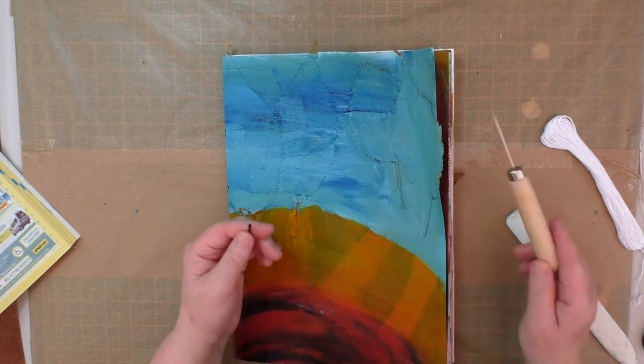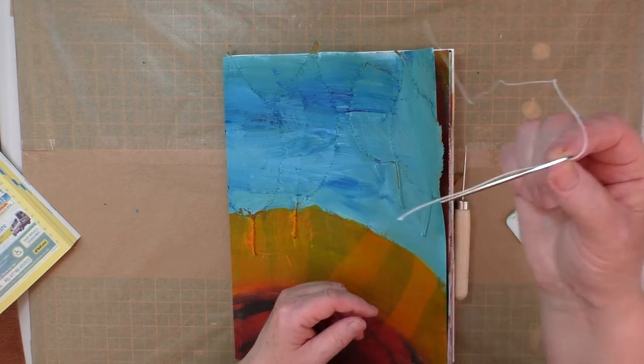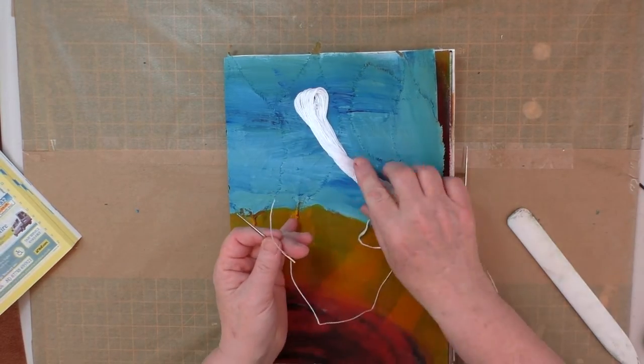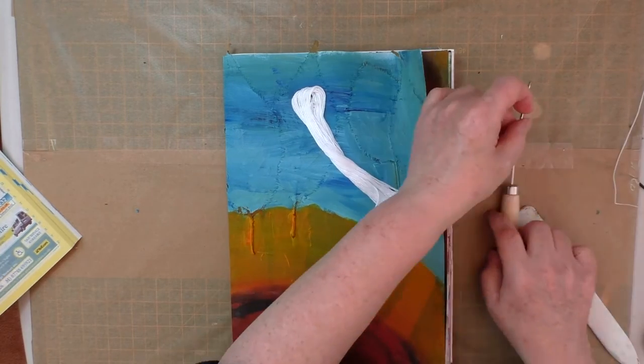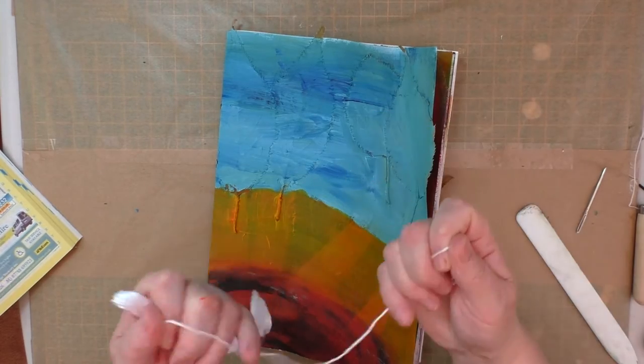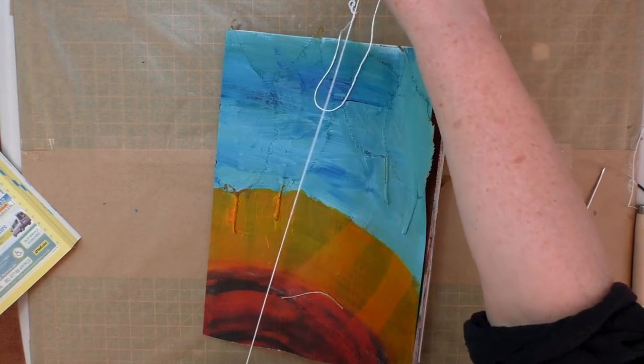So what I'm going to do now is take the awl and punch three holes into this. It's a very simple, straightforward method of binding. So I'm just going to load up my needle with the embroidery thread. This is actually quite tough,